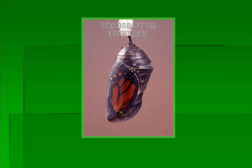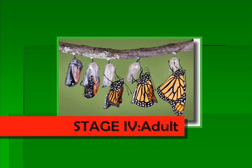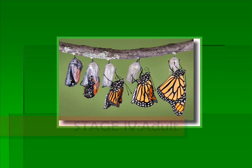Most of its organs and other body parts dissolve and reform into new organs, tissues, limbs, and wings of the adult. The butterfly pupa is called a chrysalis. Stage four is the adult stage — this is the final stage.